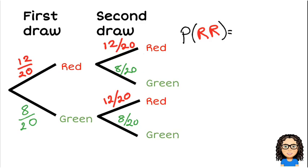You're going along the branches, you're going to multiply. So that's 12 out of 20 times 12 out of 20, which is 0.36. That's the first combination.